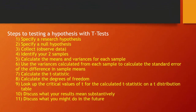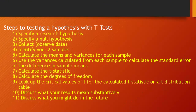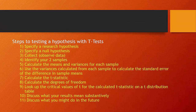There's a set of steps to follow when testing a hypothesis with a t-test. First, specify your research hypothesis — which category of the independent variable do you expect to have a higher mean? Second, specify a null hypothesis claiming no relationship between the independent and dependent variable. Third, collect and observe data and identify your samples. Fourth, calculate means and variances for each sample and use those to estimate both the standard error of the difference in sample means and the t-statistic. Fifth, calculate degrees of freedom. Sixth, look up the critical values of t. Seventh, discuss what the results mean substantively relative to your hypothesis. And finally, discuss future research directions.